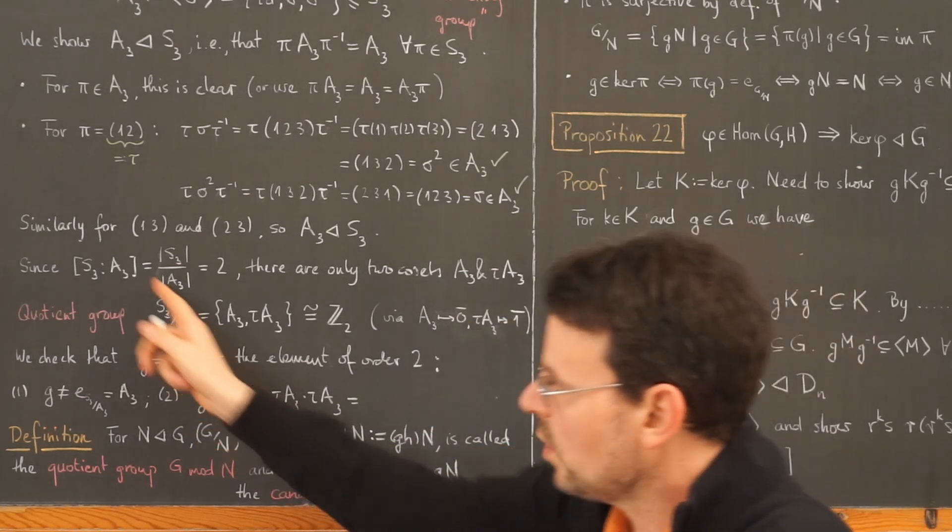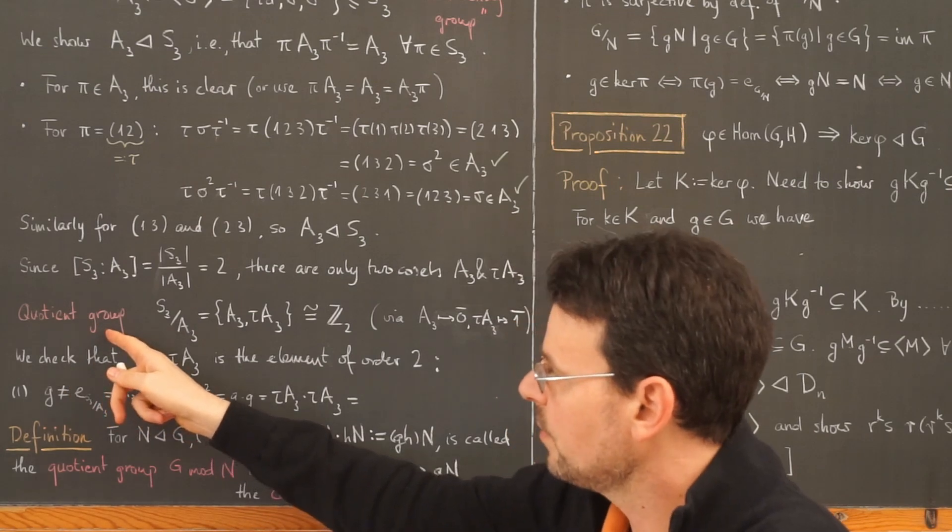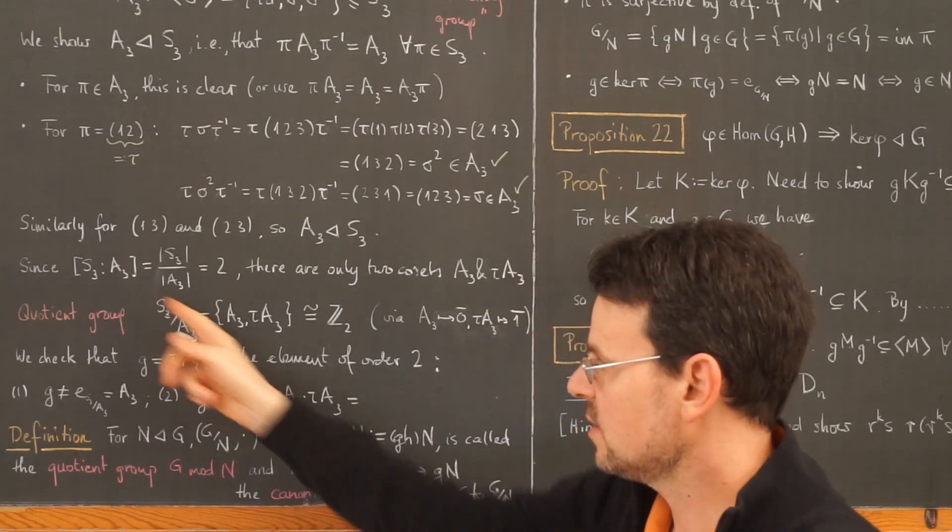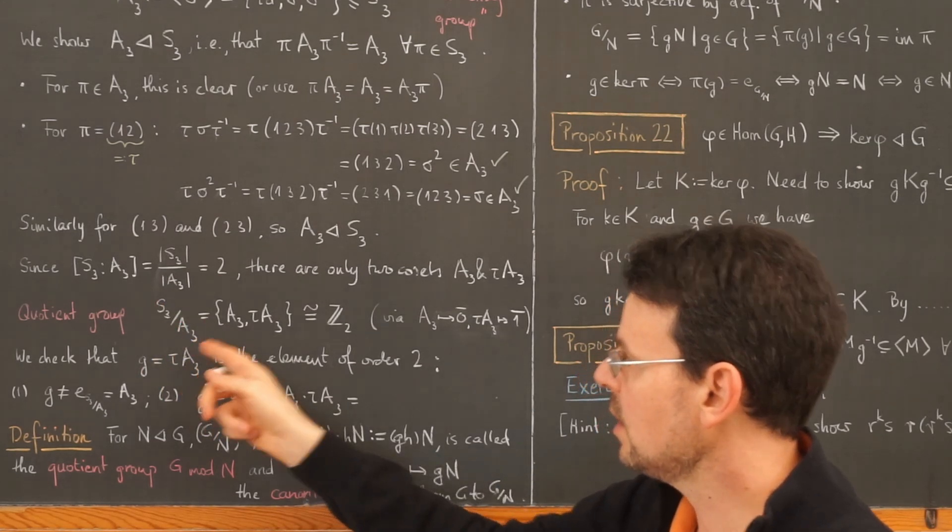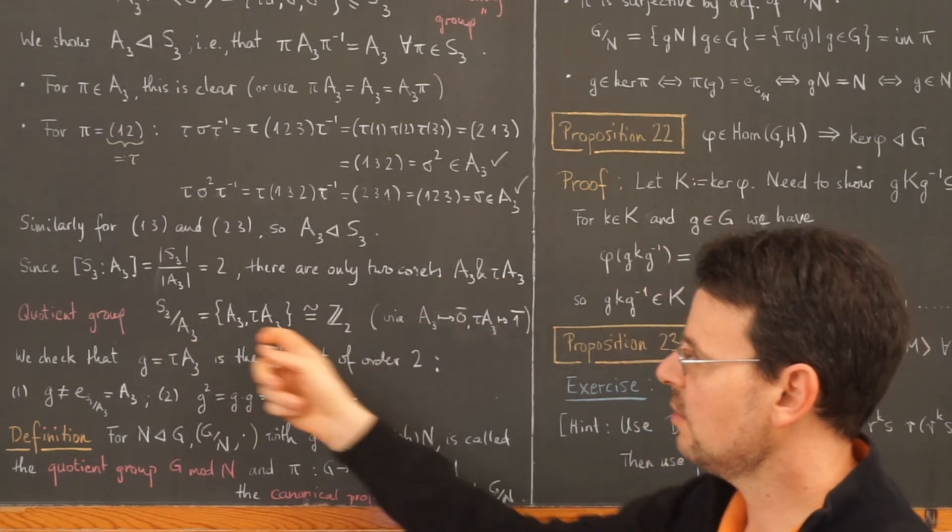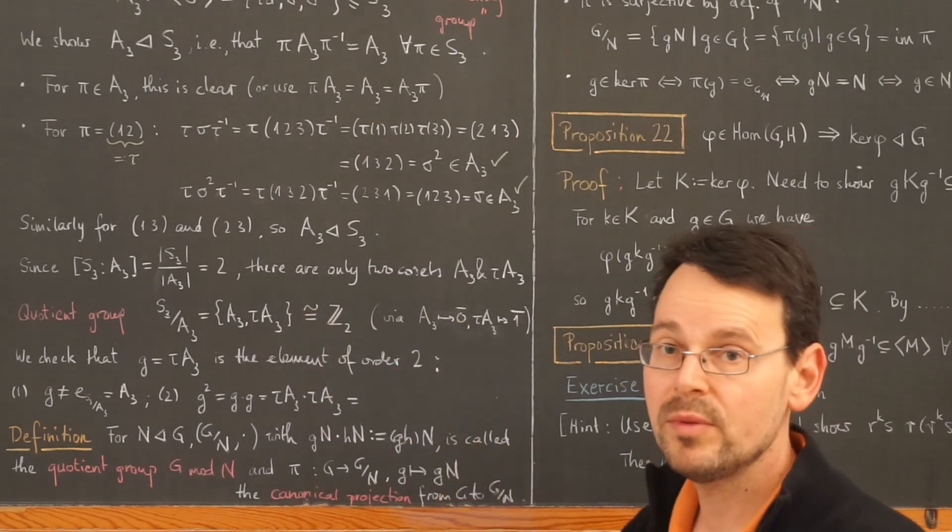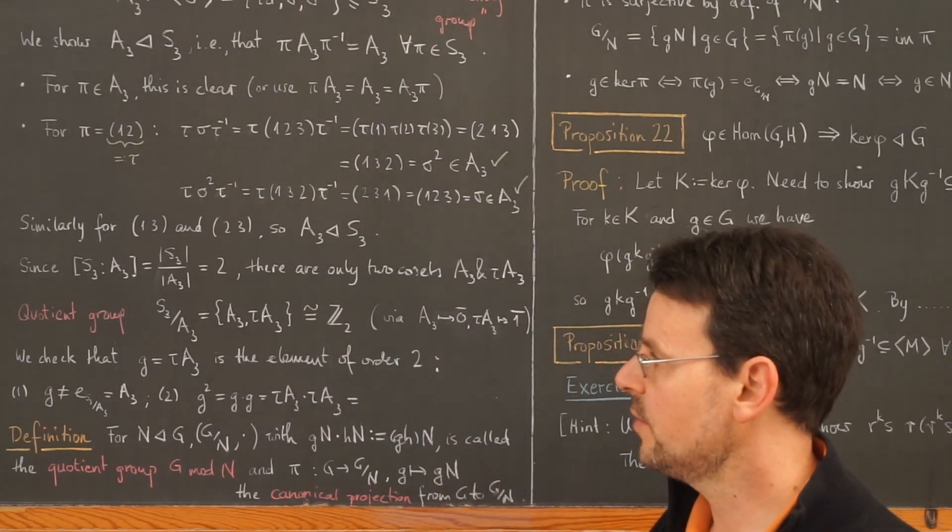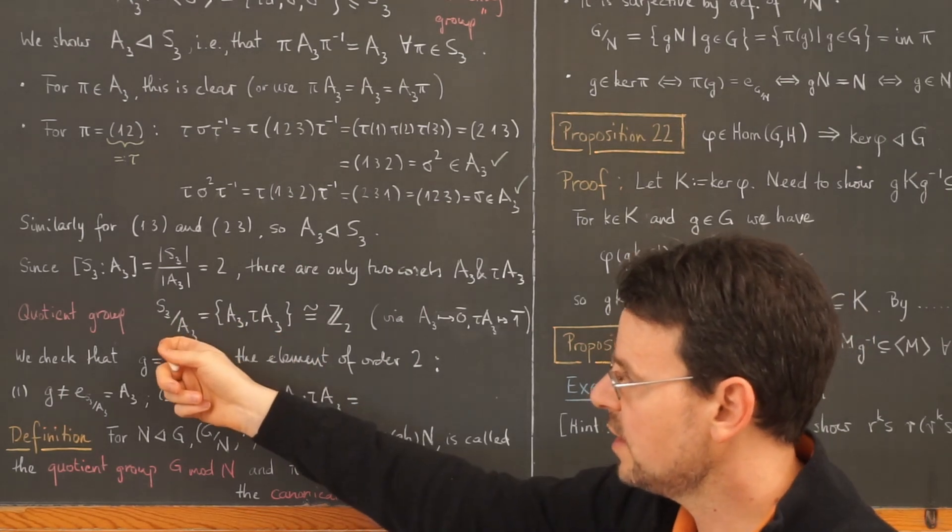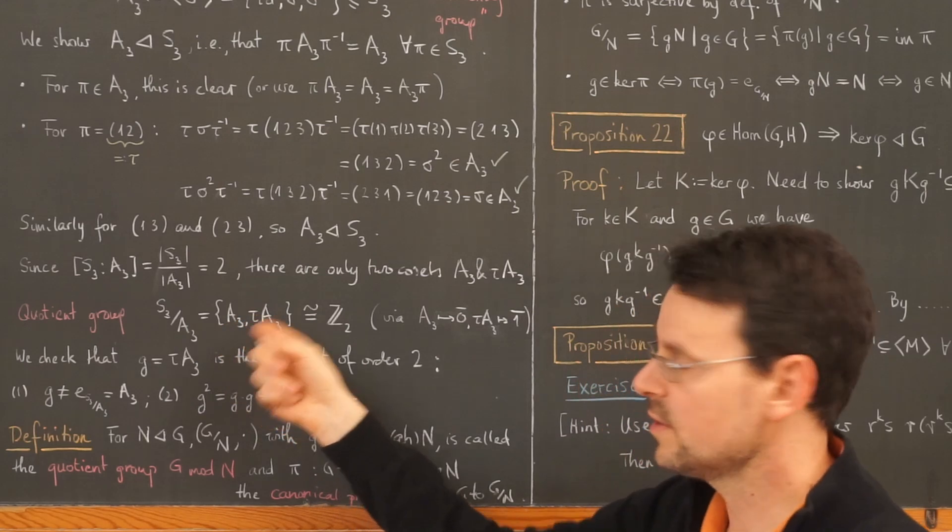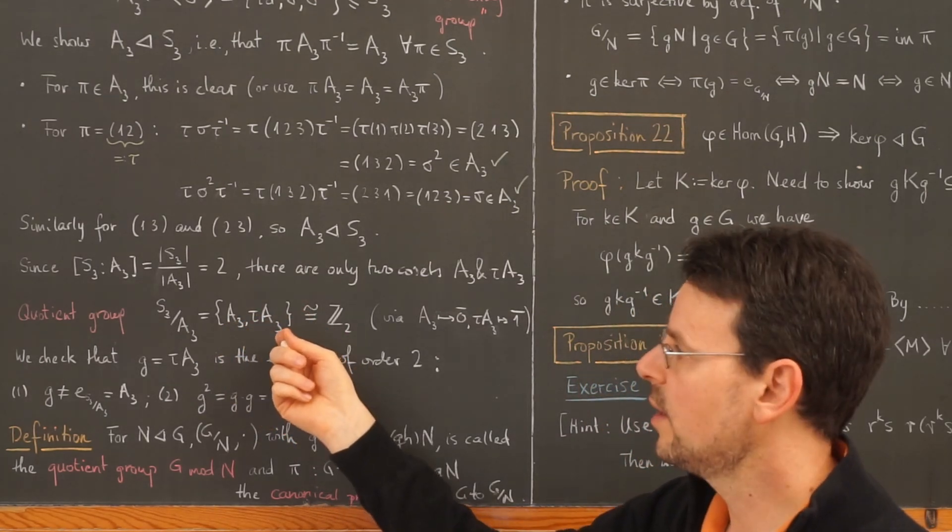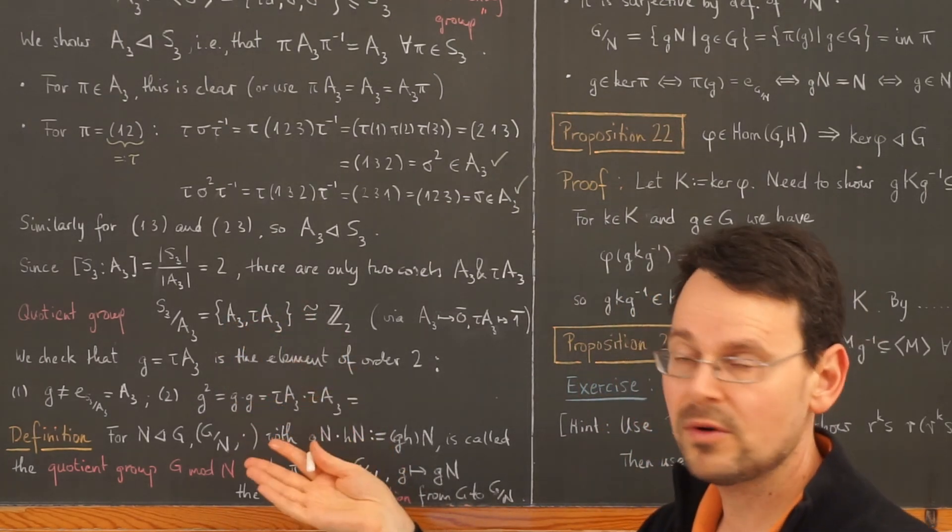So what is the quotient group? The quotient group as a set is simply the factor set S3 modulo A3, which consists exactly of these two different cosets. And now we proved in the last video that if this here is a normal subgroup, which it is, then this here can be given the structure of a group.